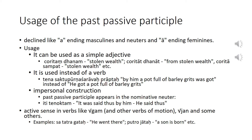Note that the past passive participle can have an active sense in verbs like 'gam' and other verbs of motion, 'jan', and some others. The past passive participle occurs very often in the three Hitopadesha stories in lessons 4, 8, and 11. Please go through these lessons to get a full understanding of how the past passive participle is used.